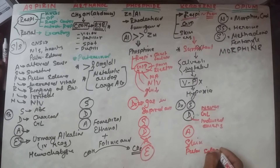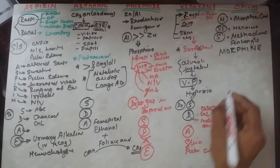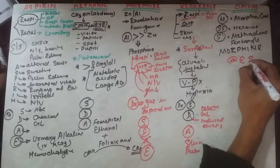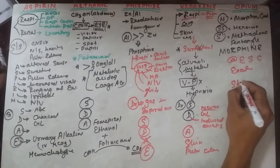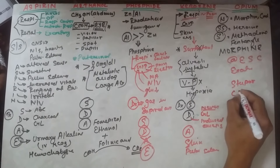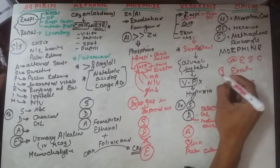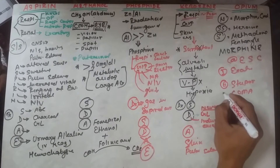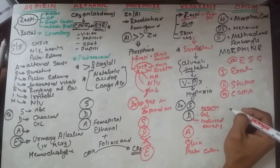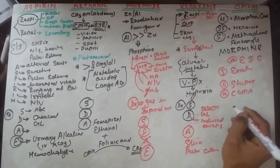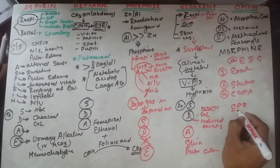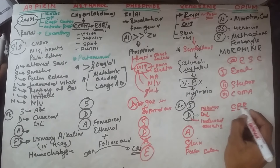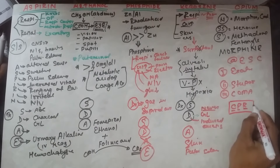In opium poisoning, the usual presentation is divided into three stages remembered as E-S-C: E = Excitement, S = Stupor, C = Coma. The pathognomonic triad for morphine poisoning is remembered as CPR: C = Coma, P = Pinpoint pupils, R = Respiratory distress.